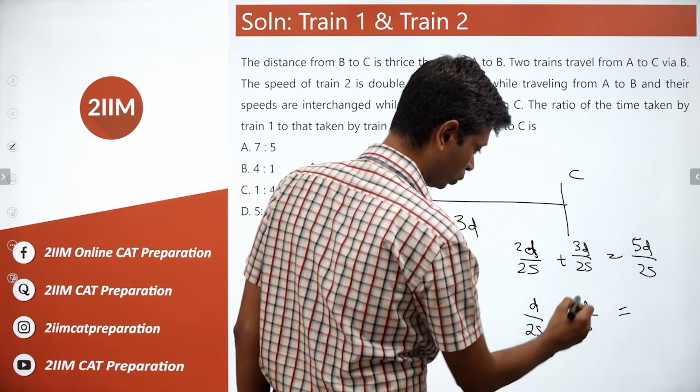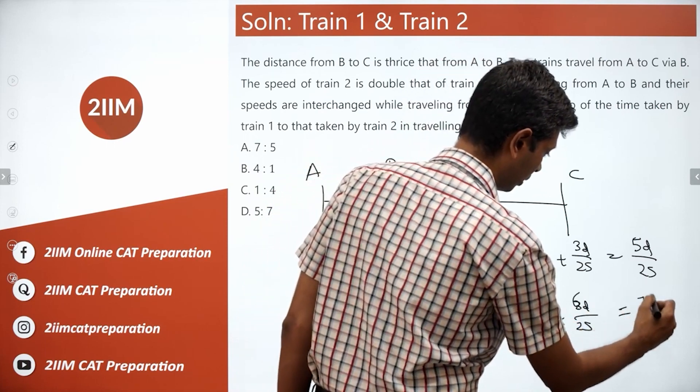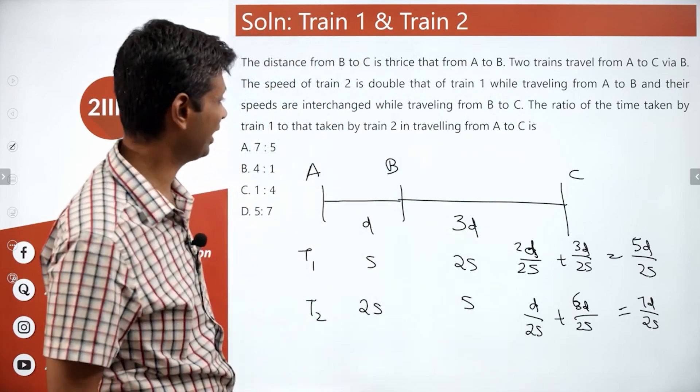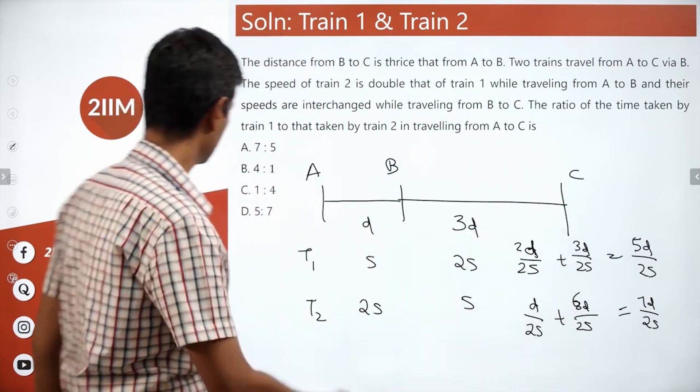This is 6D by 2S. This is 7D by 2S. The ratio of times taken is this is to this, which is 5 is to 7.